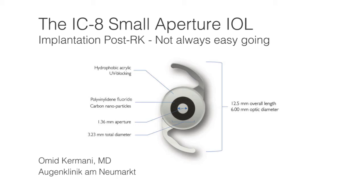The implantation of an IC8 small aperture IOL in a post-RK eye has advantages regarding the reduction of optical aberrations. At the same time, the small aperture increases the depth of focus and improves intermediate and near vision. The implantation, however, can be complicated by some traps I would like to reveal in this video for fellow surgeons.